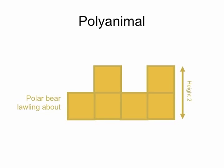The second way that I'm going to remember them is based on their perimeter. So what's the perimeter of this polar bear? Let's count: 1, 2, 3, 4, 5, 6, 7, 8, 9, 10, 11, 12, 13, 14. So the perimeter of the polar bear is 14. The height is 2.